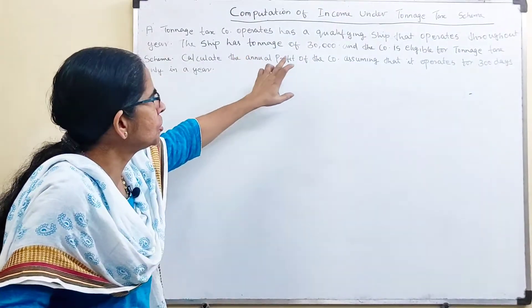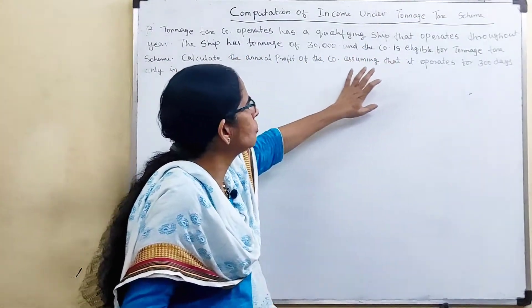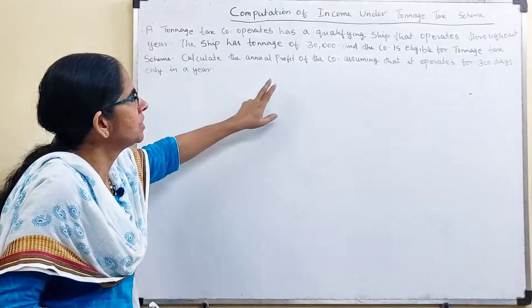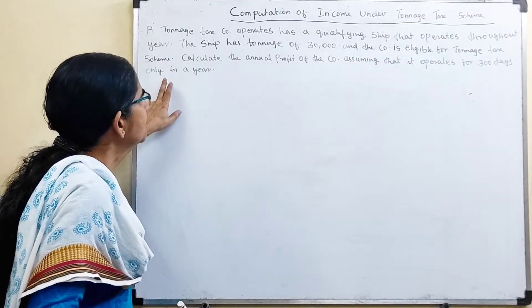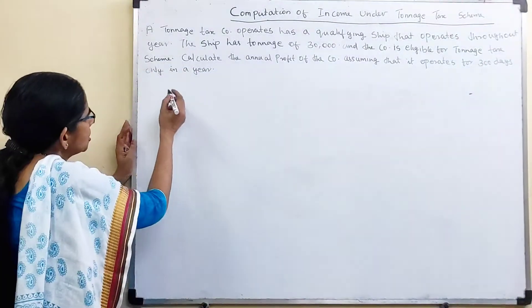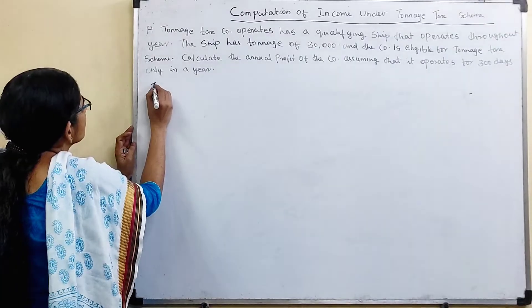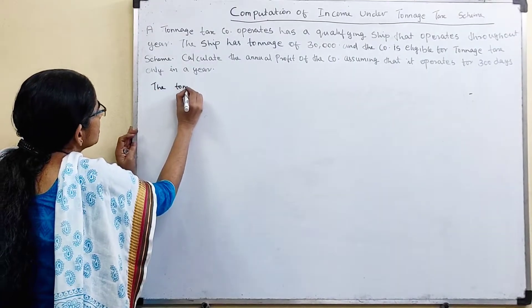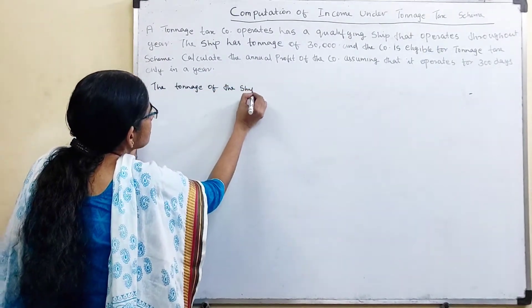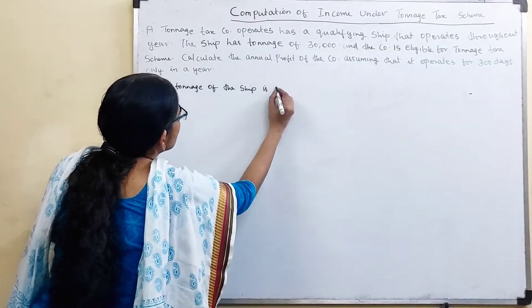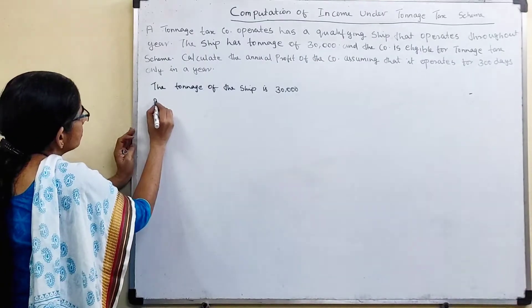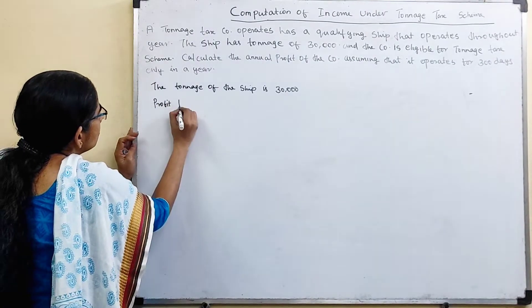The company is eligible for tonnage tax scheme. Calculate the annual profit of the company assuming that it operates for 300 days only in a year. The tonnage of the ship is 30,000. Therefore, the profit per day.